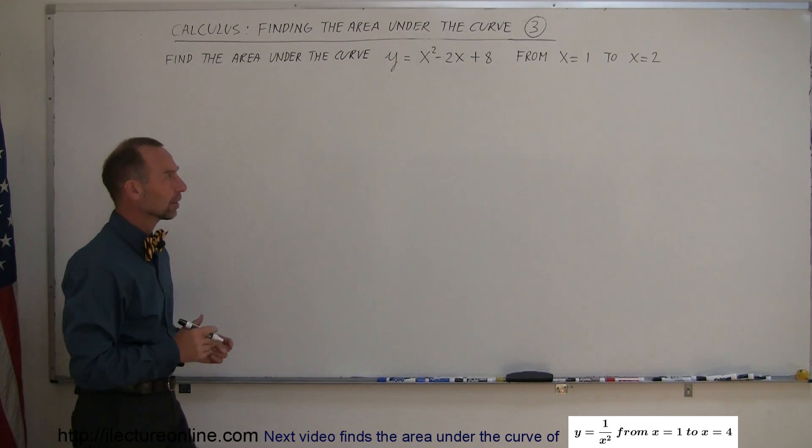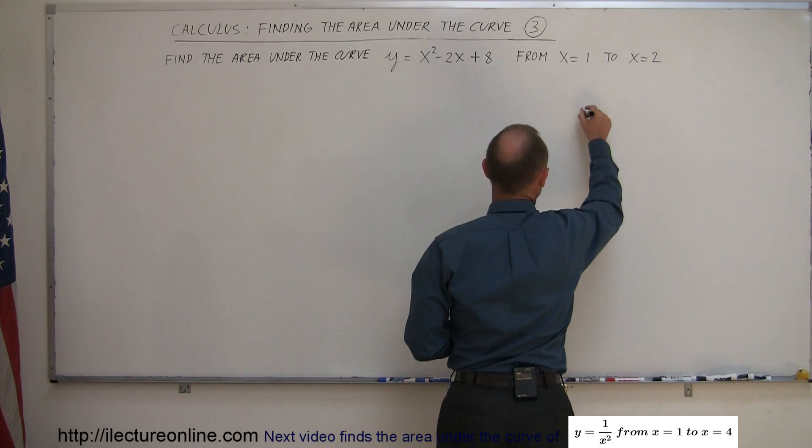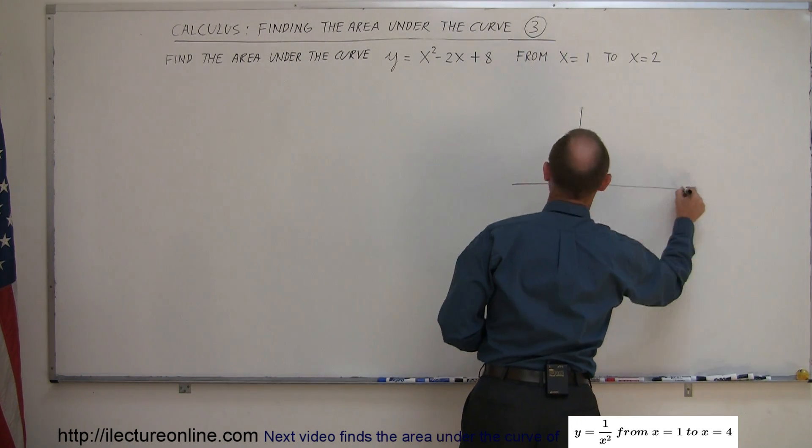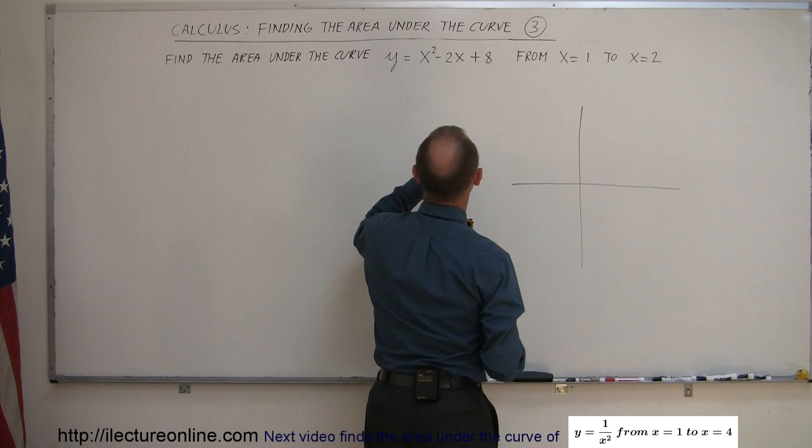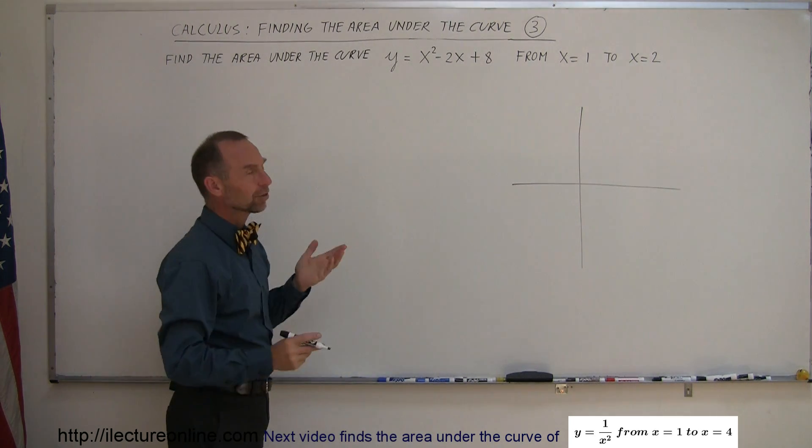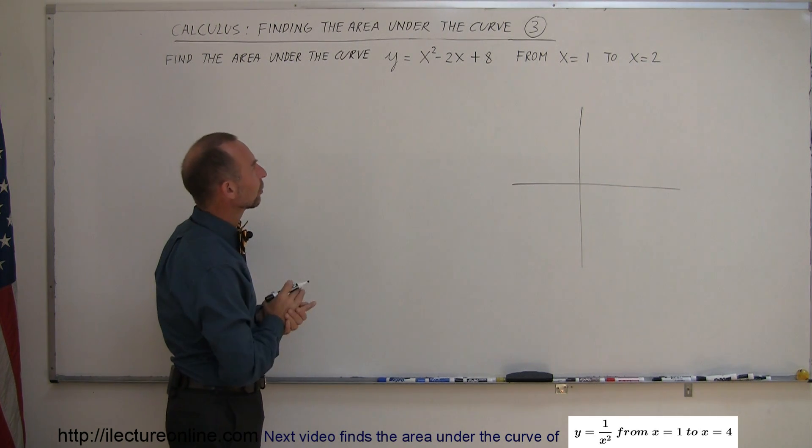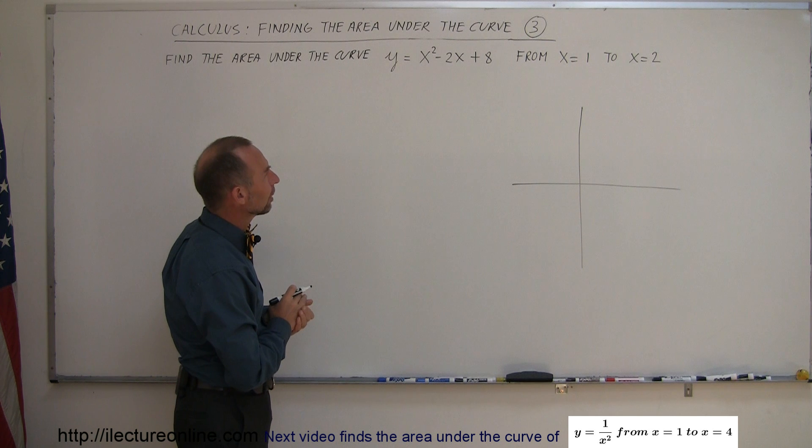The best thing to do is to graph that equation. This is a parabola that opens upward. Can we factor it? Because if we can factor, we can at least find the roots. When I look at the numbers, it doesn't look very good. It doesn't look like it has any roots.